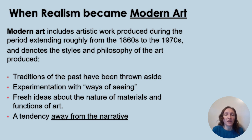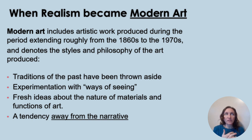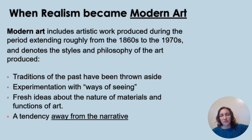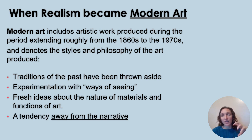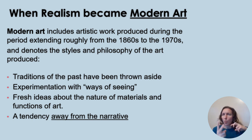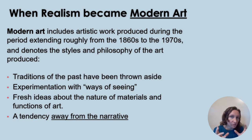So now we're talking about when realism becomes modern art. Realism changed the ideas that the academies had established — all of those rules about artwork were really being pushed aside by realism. Fresh ideas about what art is about is kind of the main goal of this lecture. There's this tendency away from the narrative, this experimentation with what we're seeing and how we're seeing it — does what we're seeing have to be connected to reality? Does it have to look like reality? Those kinds of questions are what artists are exploring.